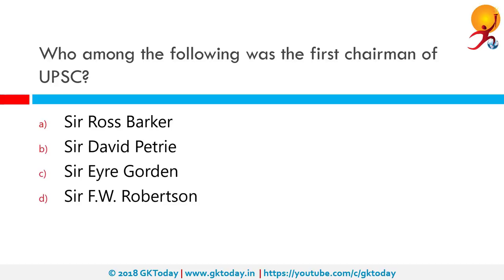Who among the following was the first Chairman of UPSC? The first Chairman of UPSC was Sir Ross Barker. The first Public Service Commission was established on 1 October 1926 under his chairmanship. UPSC is a constitutional body which conducts the prestigious civil services examination to select IAS, IFS and IPS officers. It is established under Article 315 of the Constitution and consists of a Chairman and 10 members. The Chairman and members hold office for a term of 6 years or until they attain the age of 65 years, whichever is earlier.